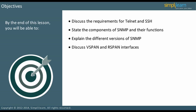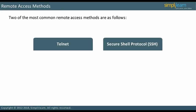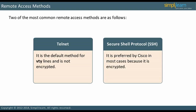Let us start our discussion by understanding remote access methods. The two most common remote access methods are Telnet and Secure Shell Protocol. Telnet is the default method for VTY lines; however, it is not encrypted. SSH is encrypted, and hence Cisco recommends using SSH whenever possible.